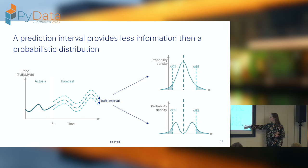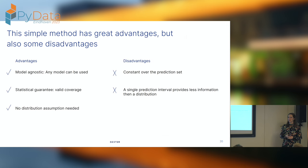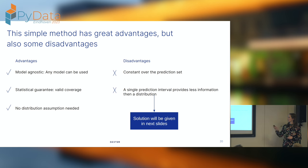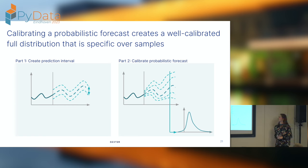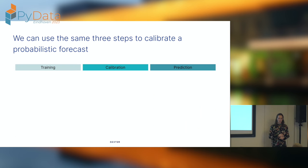Second disadvantage: a prediction interval provides less information than a full probabilistic distribution. It only gives you three points. As shown on the left, if you take a slice of the interval over time and draw the distribution, the interval is just three points — but the actual distribution can have any shape within, and very different shapes for the same interval width. There are better methods for that, which I'll get to. So in the next part I'll talk about going from a point prediction to a calibrated probabilistic forecast.